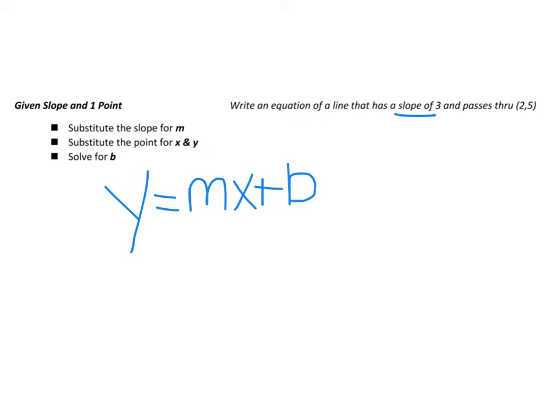Okay, so you see this one, it has a given slope of 3 and it passes through (2, 5).